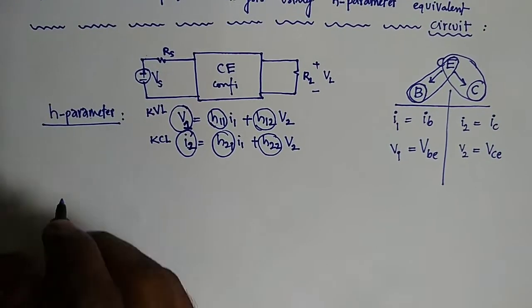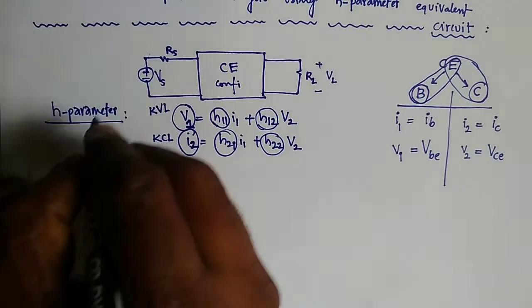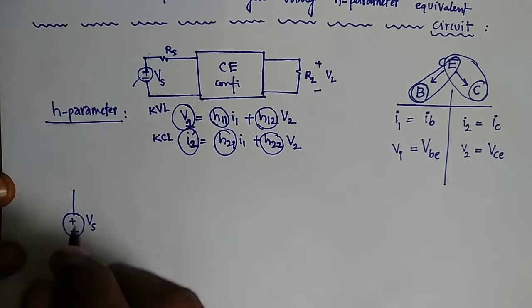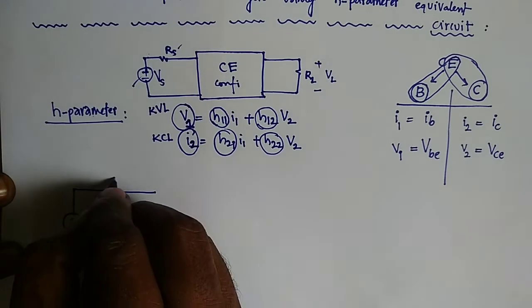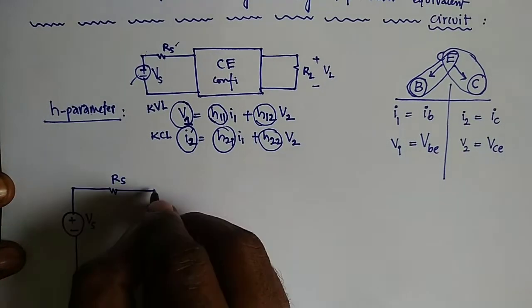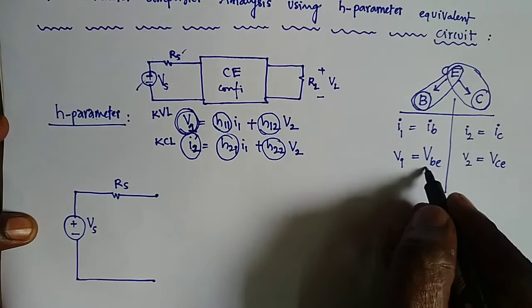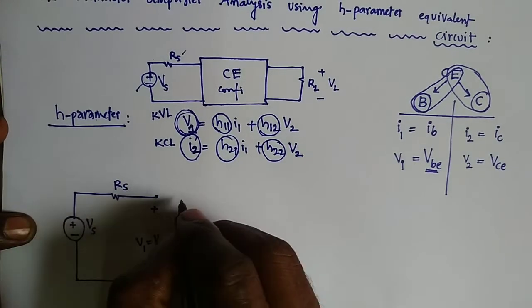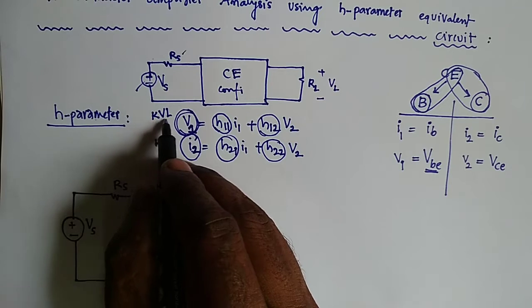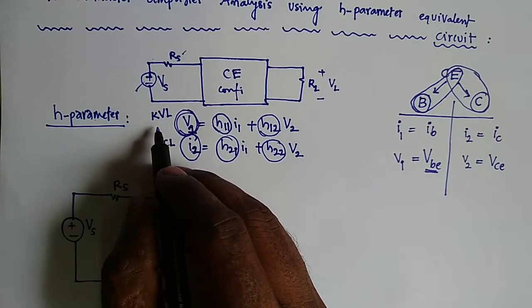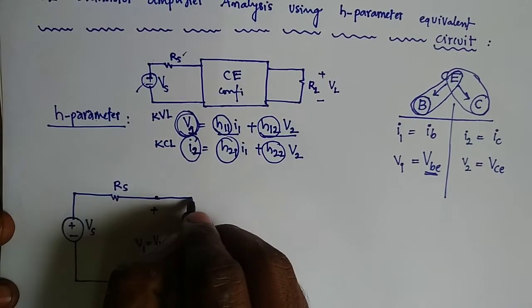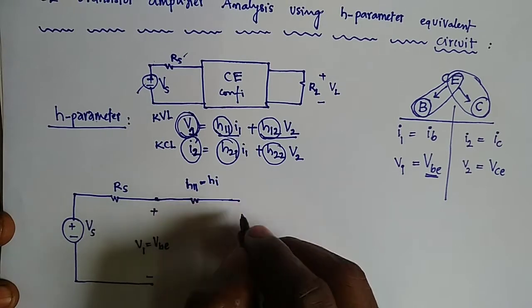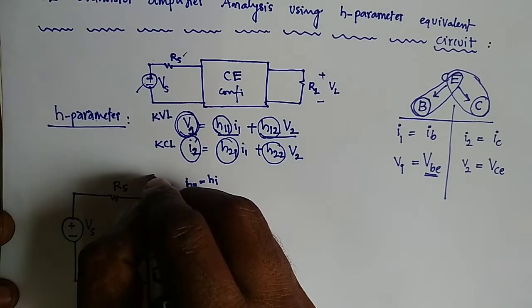For the small signal model of CE, we insert VS and RS at the input. The voltage drop V1 equals VBE. Applying KVL — the algebraic sum of all voltages in the closed loop equals zero — these two voltages are in series. H11 is the input impedance HIE, and the current in this branch, I1, equals IB.